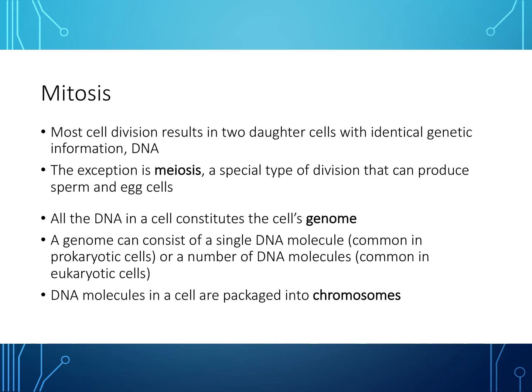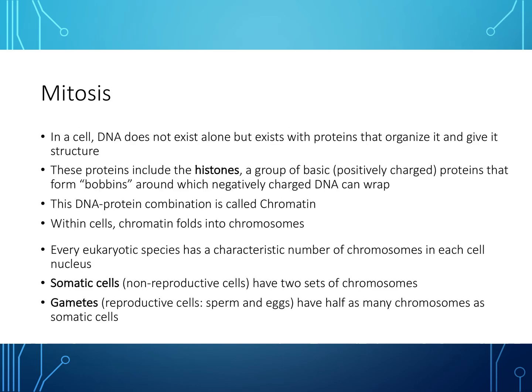All the DNA in a cell constitutes the cell's genome. A genome can consist of a single DNA molecule, common in prokaryotic cells, or a number of DNA molecules, common in eukaryotic cells. DNA molecules in a cell are packaged into chromosomes. In a cell, DNA does not exist alone but exists with proteins organized in its structure. These proteins are called histones — a group of positively charged proteins which form bobbins around which negatively charged DNA can wrap.